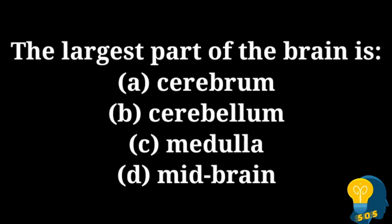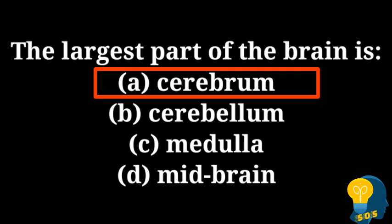The next question is: the largest part of the brain is? The options are option A: cerebrum, option B: cerebellum, option C: medulla, and option D: midbrain. The correct answer is option A: cerebrum, because cerebrum is the largest part and it is the thinking part of the brain.